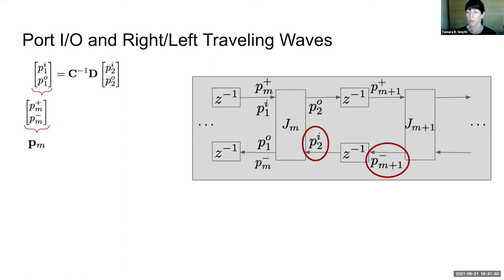Plus one, or the adjacent section, delayed by one sample. The output wave on the right port is equal to the right traveling wave in section M plus one, advanced by one sample.